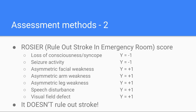Another similar tool to FAST assessment is the ROSIER score, with ROSIER standing for Rule Out Stroke In the Emergency Room. As you can see, it really only adds leg weakness and visual field deficits to FAST, but also starts adding criteria to make stroke less likely — seizure or loss of consciousness. Unfortunately, its positive and negative predictive values are, probably unsurprisingly, not vastly better than FAST. The name, therefore, is really not very appropriate — it doesn't rule out stroke; it merely makes it less likely.